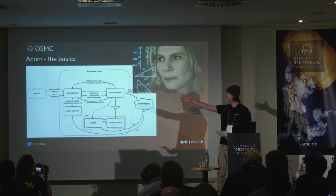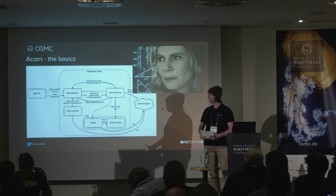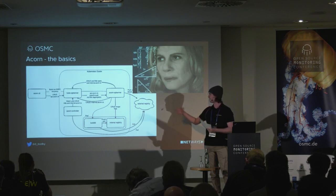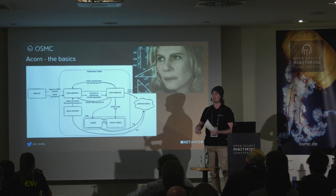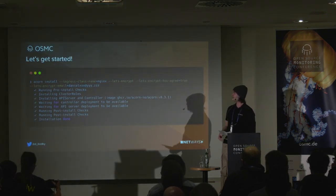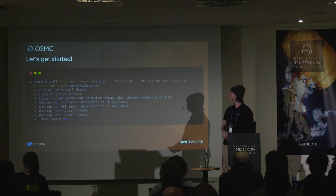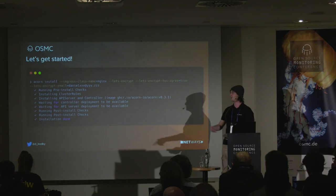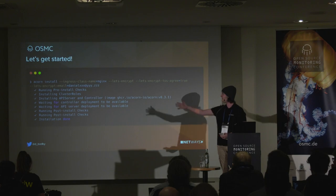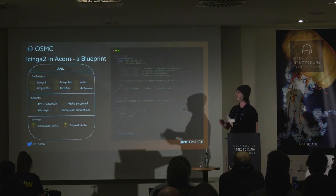Let me break it down quickly. You have an Acorn CLI locally running, which communicates with an API server and a controller in the cluster. They are in charge of building your images, pushing them to registries, pulling them again, and reconciling them so the actual workloads get spawned. You can install it like this — I normally activate the automatic ingress creation feature and Let's Encrypt support so I can actually reach my endpoints via HTTPS if I run it in a proper cluster. It installs the API server and controller, runs some checks for the ingress, and then we're done.